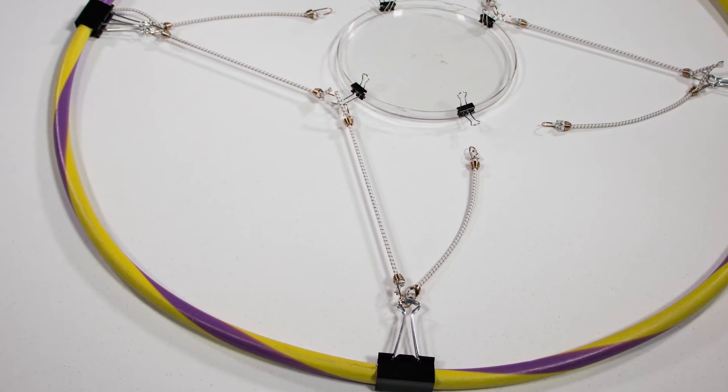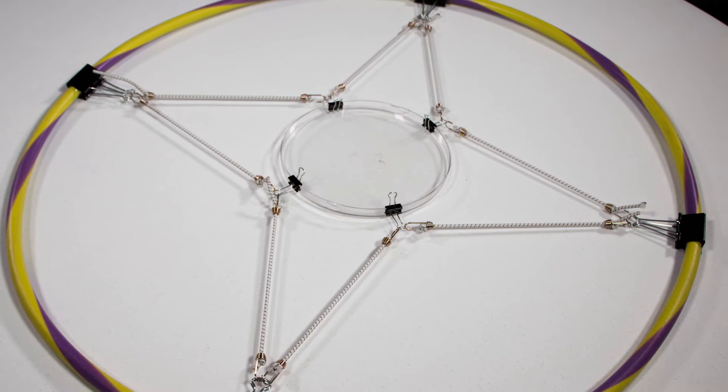Use eight little bungee cords, about nine or ten inches long, to suspend the resonator in the middle of the hula hoop.